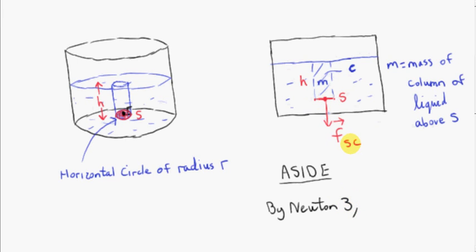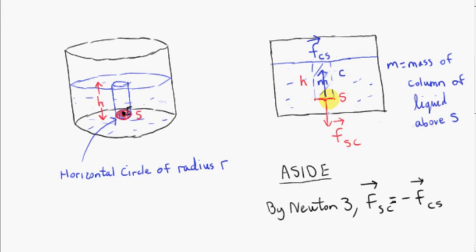We can apply Newton's third law. We have a force on s due to c — the force on the sliver due to the column of liquid, a contact force acting at right angles to the surface of contact. So that means we have an equal and opposite force on c due to s: vector F_sc equals minus vector F_cs. Vector F_cs is shown in blue, as it acts on the column c, not on s.